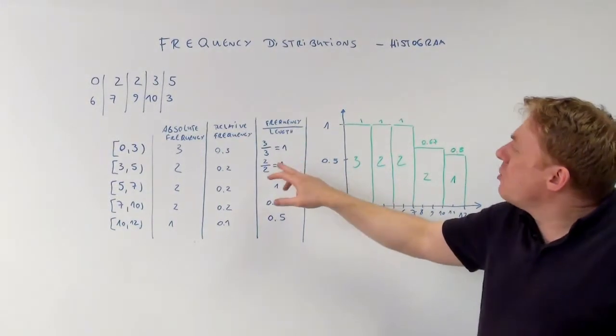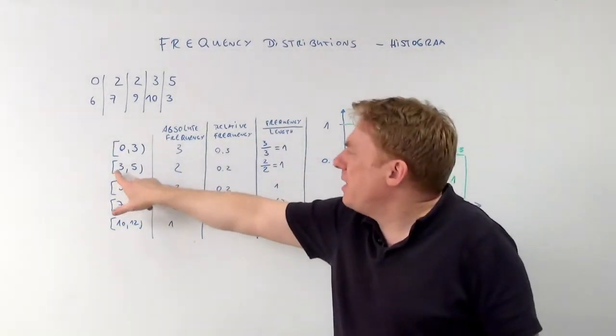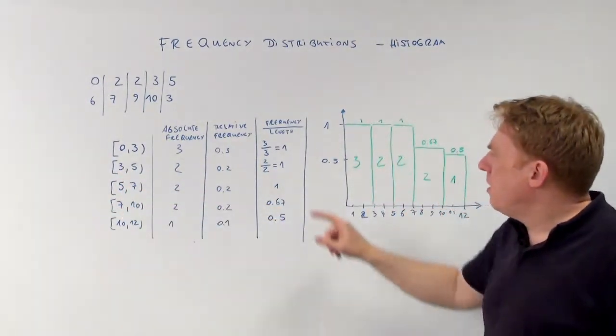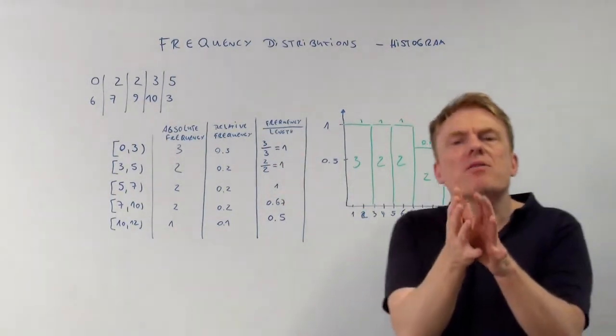The second, just as well, 2, the absolute frequency divided by the length of the interval going from 3 to 5, and so on. So these are the heights of the bars of the histogram.